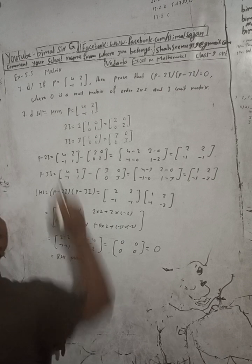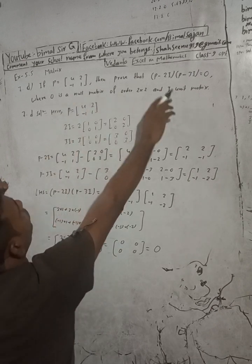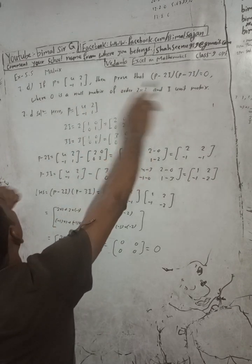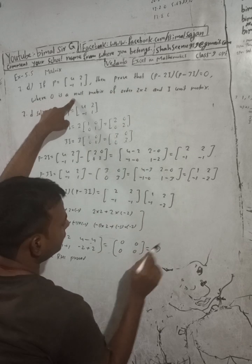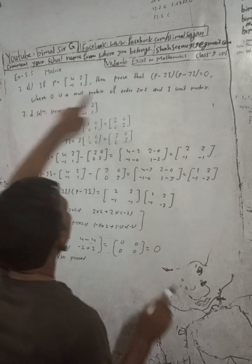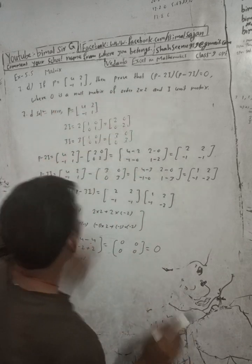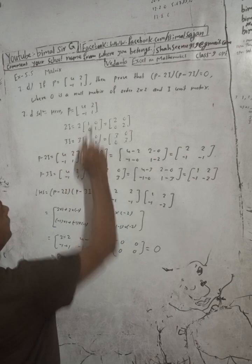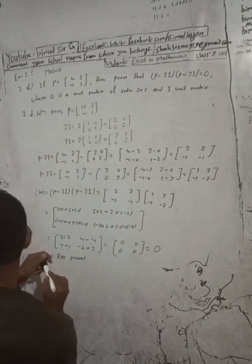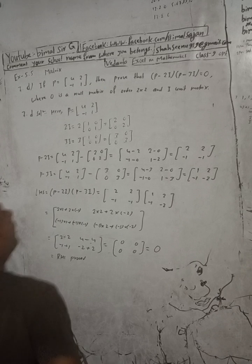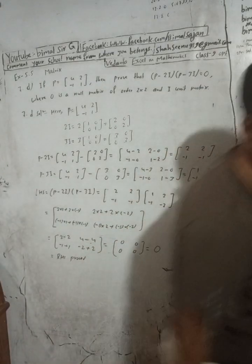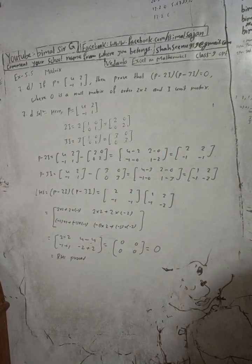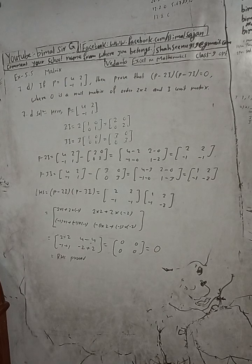We proved that this is equal to O, where O is the null matrix, meaning zero matrix. I is the unit matrix. I have completed solution 7D. Check the playlist, I have already uploaded this and other solutions.